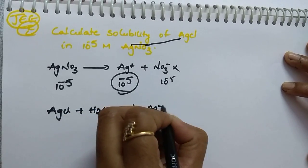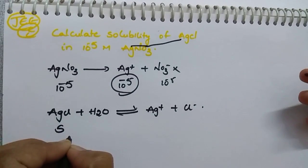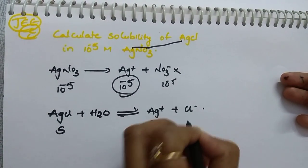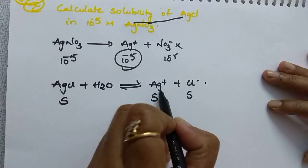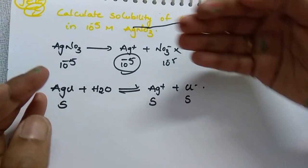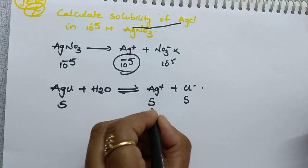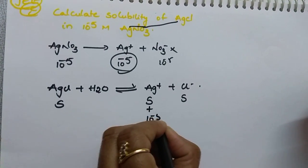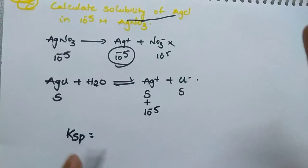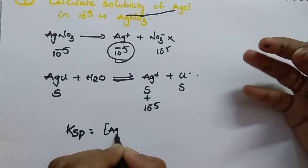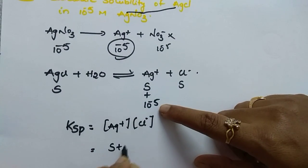When we dissolve AgCl in water, we get Ag⁺ and Cl⁻. If solubility is s, then [Ag⁺] = s and [Cl⁻] = s. But Ag⁺ is the common ion — the solution already has an extra 10^-5 mol of Ag⁺ from AgNO3. So the total [Ag⁺] = s + 10^-5. Now write the Ksp expression: Ksp = [Ag⁺][Cl⁻] = (s + 10^-5)(s).